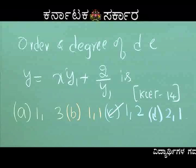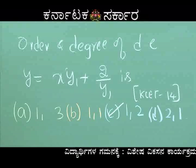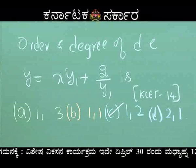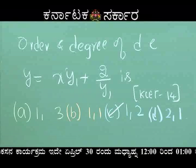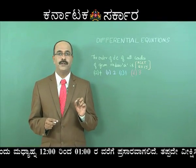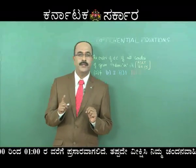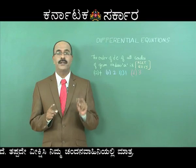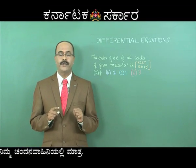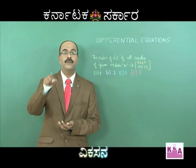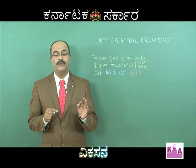The number of arbitrary constants defines the order of the differential equation. One arbitrary constant gives first order; two arbitrary constants give second order; three give third order. If n is the number of arbitrary constants in a given equation, when you eliminate all arbitrary constants, you get a differential equation of order n.